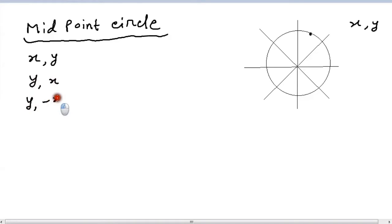We have y, minus x. We have x, minus y. We have minus x, minus y. We have minus y, minus x. We have minus y, x. And minus x, y, okay?